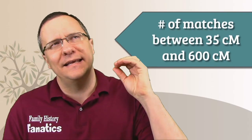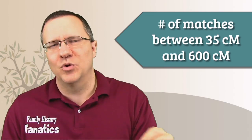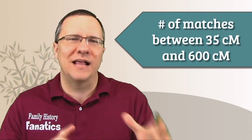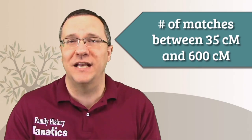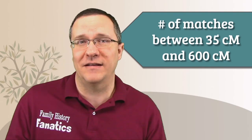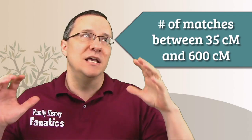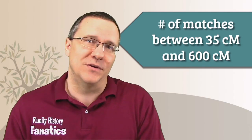Well I mean that it is the number of matches between 35 centimorgans and 600 centimorgans. That means that there's a likelihood you're going to be able to find out how you are related within a genealogical time frame. Now it doesn't mean that if there's matches less than this you're not going to find out how you're related. It's just that this group of matches is much more likely that you're going to be able to identify that specific relationship.